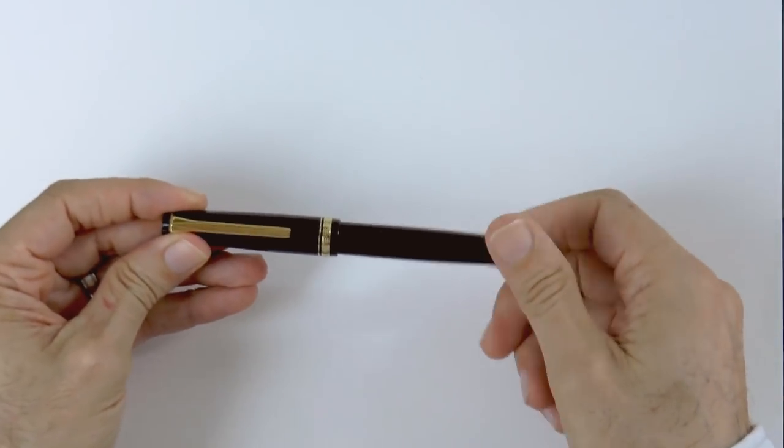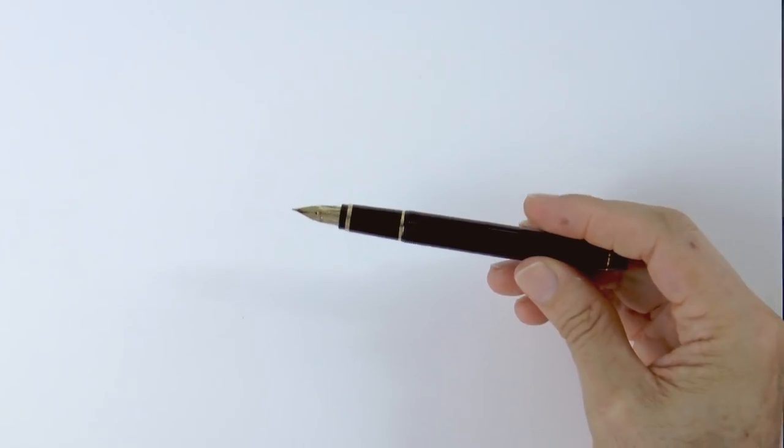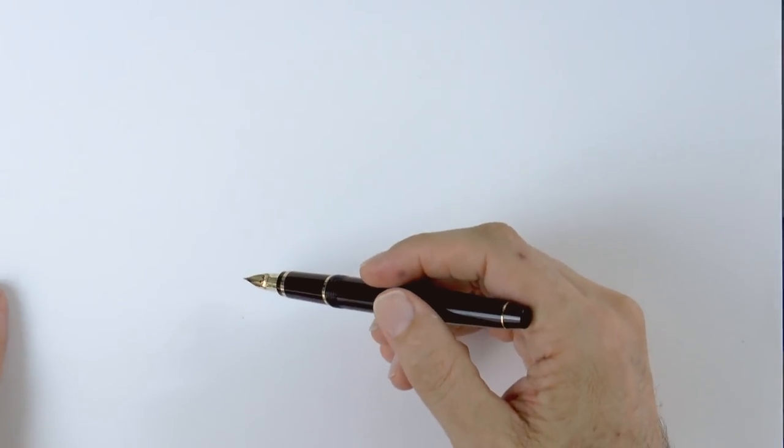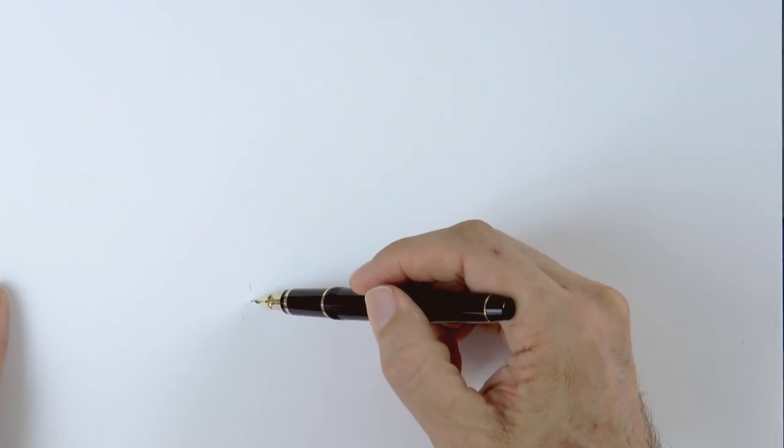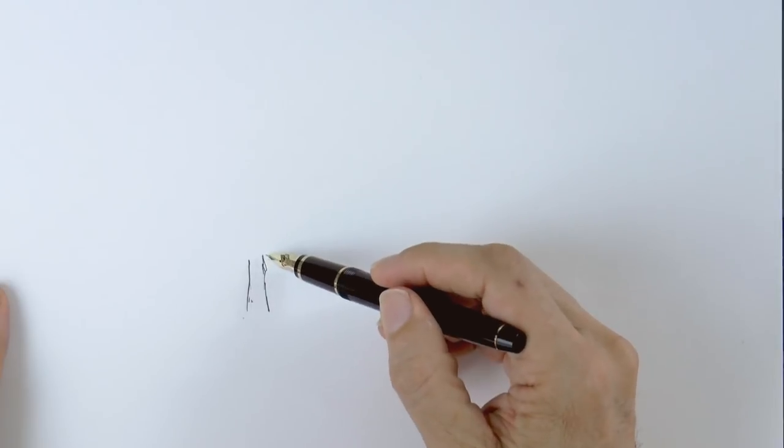Hello my friends and welcome to another Tuesday of tutorial! I am Leonardo Pereznieto and today we will do something very simple. A tree and birds with a fountain pen. We begin with the trunk of the tree and some of its branches.